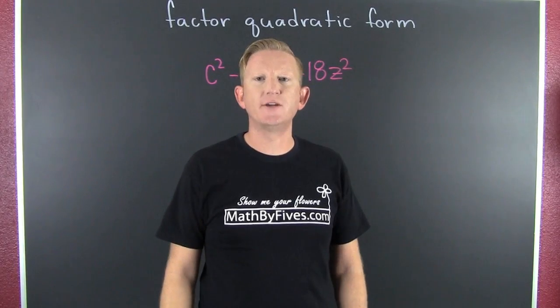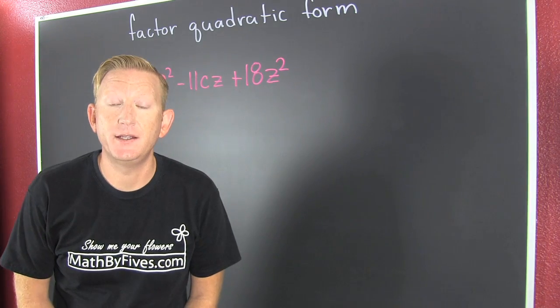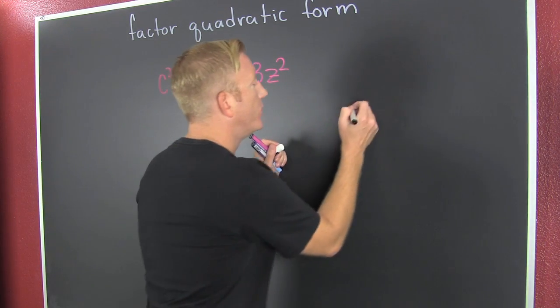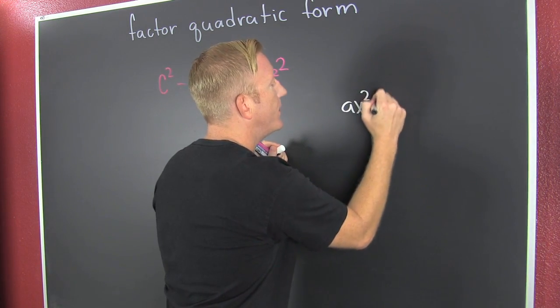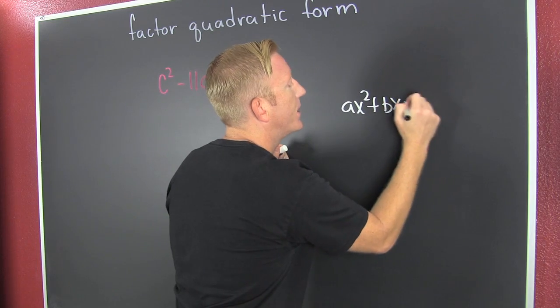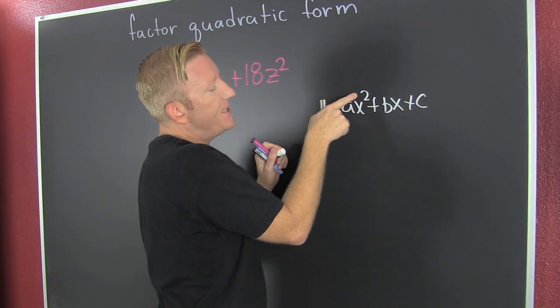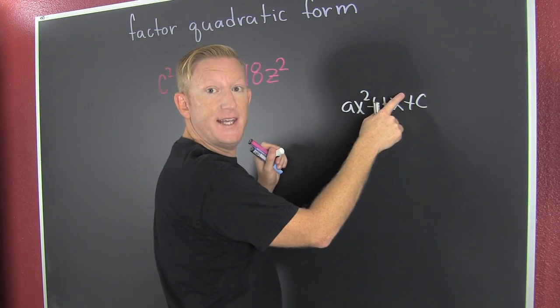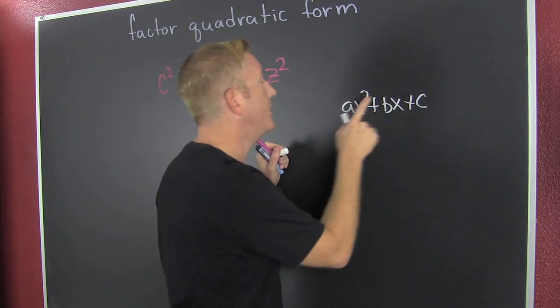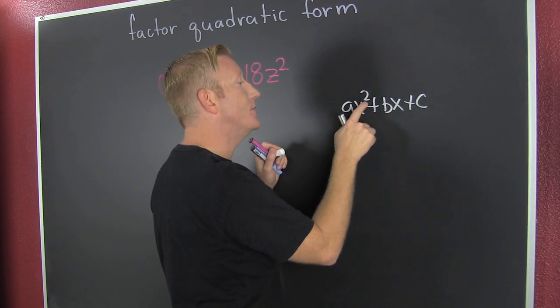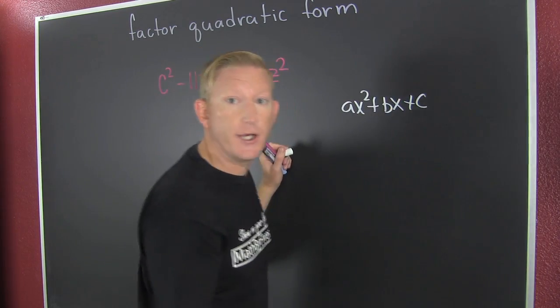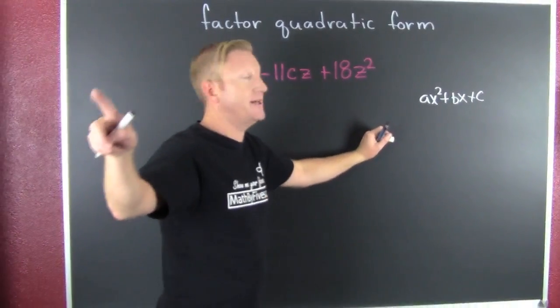Here we're factoring things that are quadratic in form. What do I mean? I mean they have this form: ax squared plus bx plus c, where we see that this is twice that. When I say this, I'm talking about the exponent. When this is twice that, two is twice one, it's quadratic in form, which brings us to this.